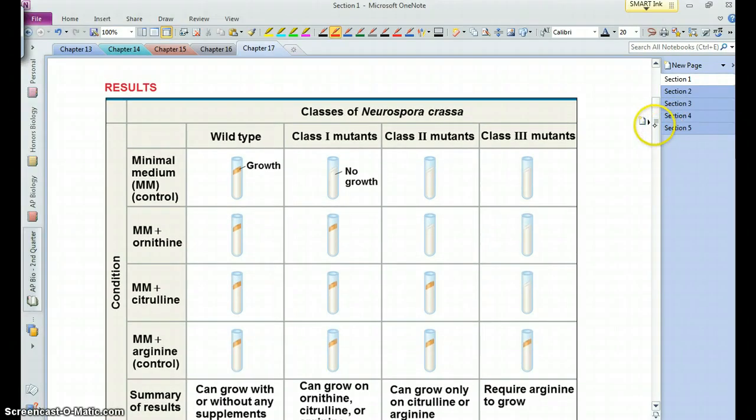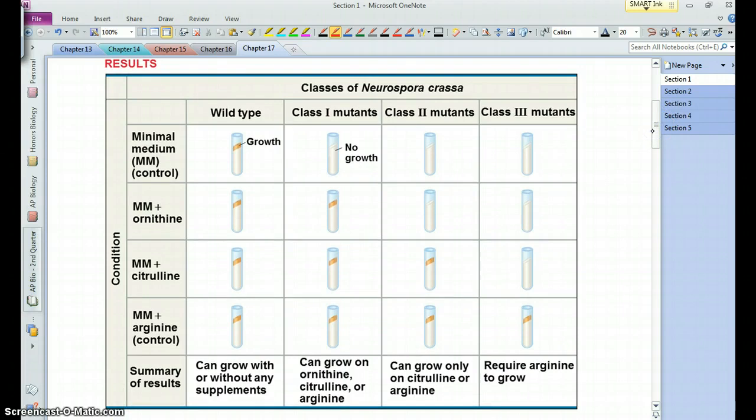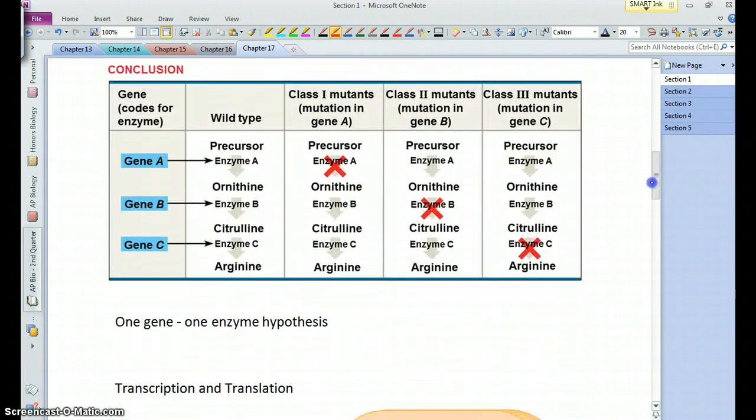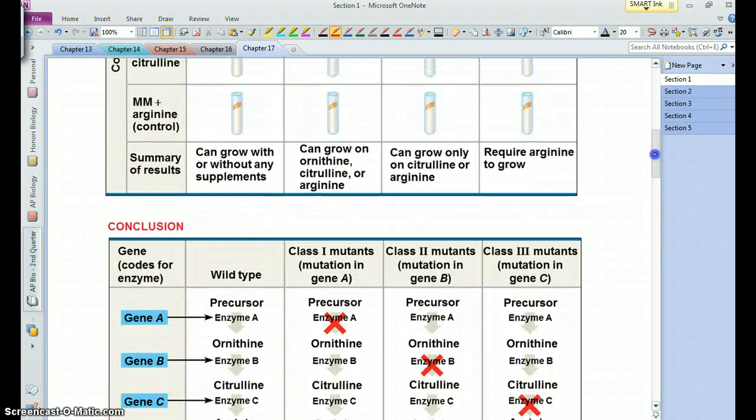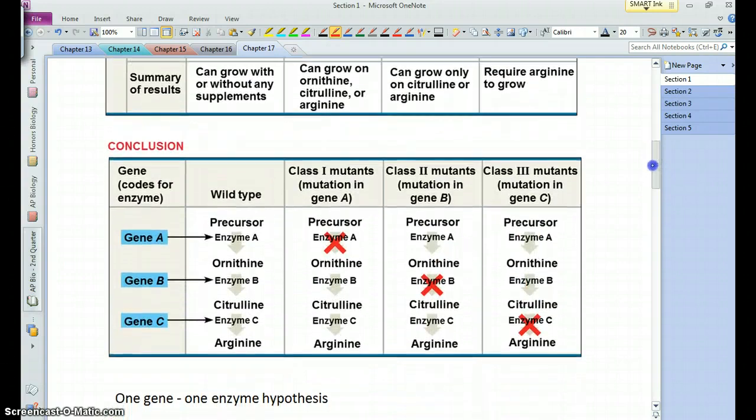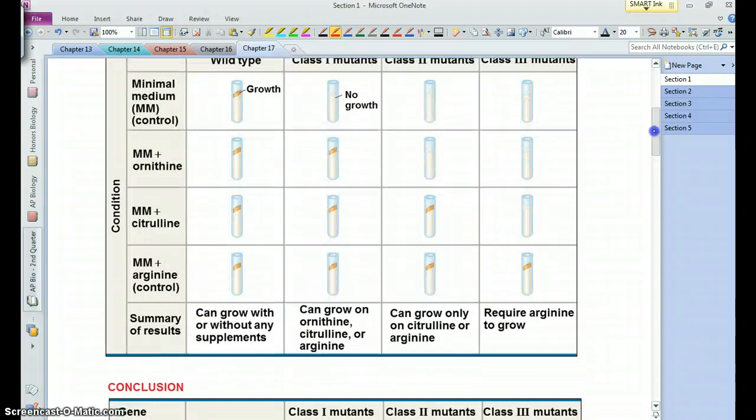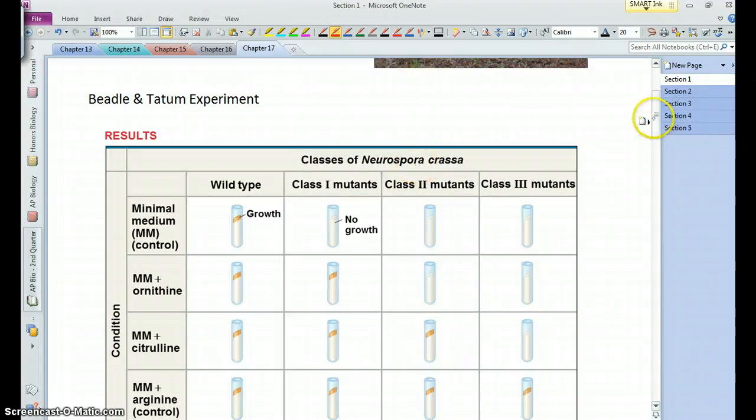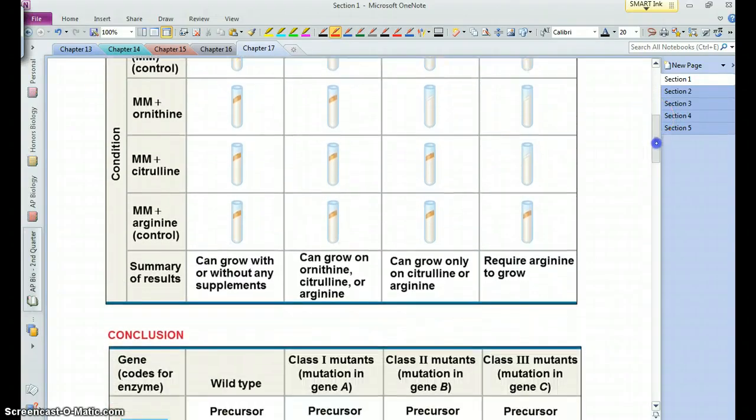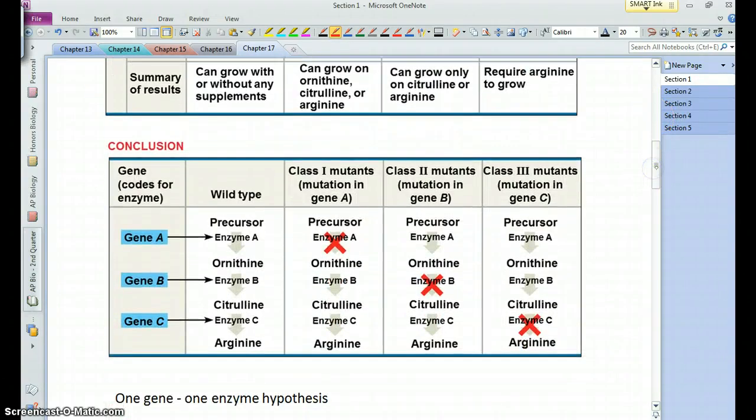This became known as the one gene-one enzyme hypothesis. In their experiment, they're looking at this organism Neurospora, a type of protist that has this biochemical pathway in which a starting molecule is converted into ornithine and then citrulline and arginine, and there are a series of enzymes that do this.